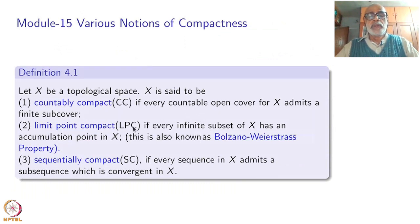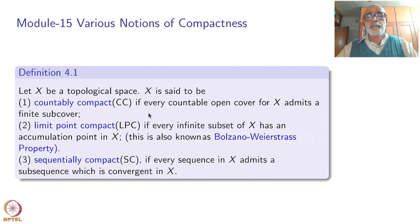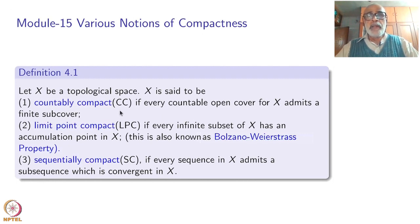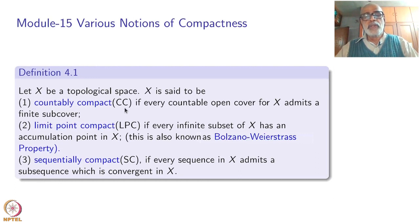Start with any topological space. I am going to introduce three different notions of compactness. The first one is countable compactness, which I may denote CC. Countable compactness means: every countable open cover for X admits a finite subcover. This is similar to Lindelof but in contrast — Lindelof property takes any cover to a countable cover, whereas countable compactness takes a countable cover to a finite cover. You can see that Lindelof plus countable compactness implies compactness.